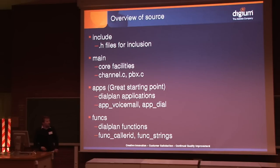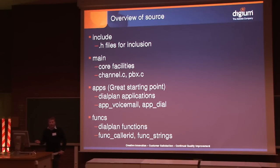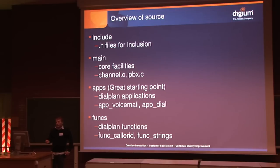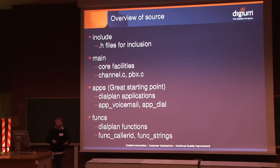The next directory is the apps directory, which contains dial plan applications within Asterisk. For anyone who's used Asterisk before, you've probably used things like Dial and Voicemail and possibly other applications — these are all in the apps directory. This is a great starting point because for most people who use Asterisk, this is what they see and feel when they're using it. So it's a good place to look at what core API calls are being made and dig deeper from there.